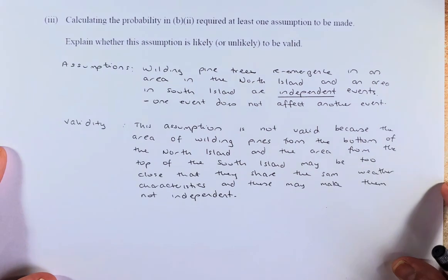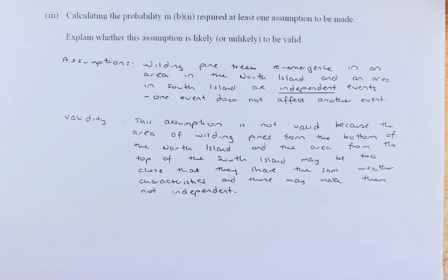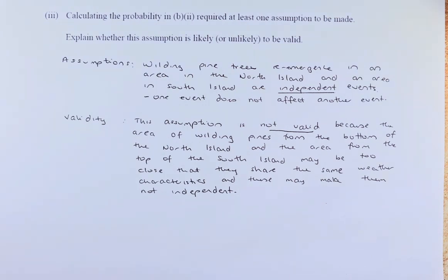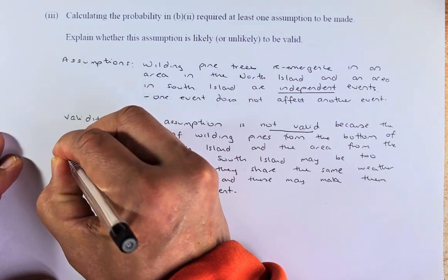Last but not least, we're going to do a justification question — an assumption question. Calculating the probability in part B2 requires at least one assumption to be made. Explain whether this assumption is likely or unlikely to be valid. The assumption is that wilding pine tree re-emergence in an area in the North Island and an area in the South Island are independent of each other — that one event does not affect another event. However, this assumption is not valid. The reason being, the area of wilding pine from the bottom of the North Island and the top of the South Island may be too close — they share the same weather characteristics — and this may make them not independent. Therefore they are not independent events, and answering that point will give you an excellent.